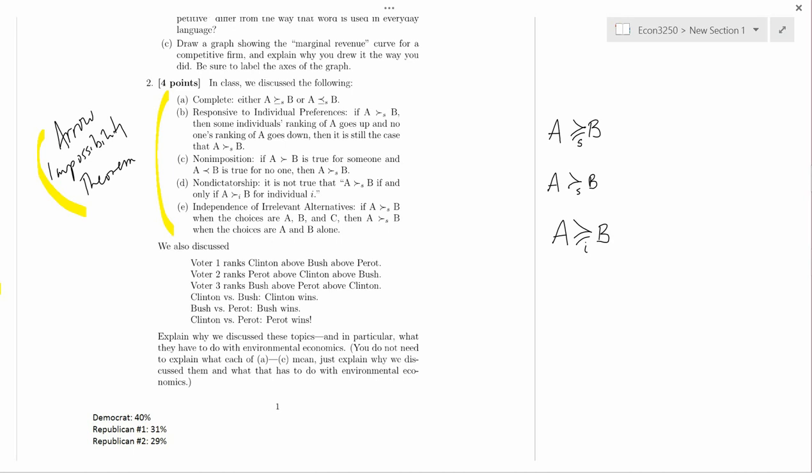Now, one way of describing the flaw in voting methods, we know there has to be a flaw in voting methods because of the Arrow Impossibility Theorem. Voting can't be perfect. So let's discuss what the flaw in a majority voting system is. Suppose you have three voters and this is the 1992 presidential election. You have Bill Clinton running against George H.W. Bush, the first president Bush, and a person named Ross Perot, a famous businessman who was a third-party candidate. Voter one ranks Clinton above Bush above Perot. Voter two ranks Perot above Clinton above Bush. And voter three ranks Bush above Perot above Clinton.